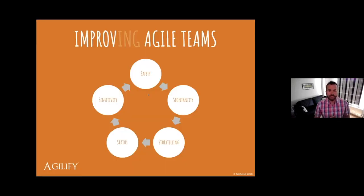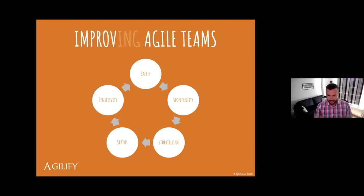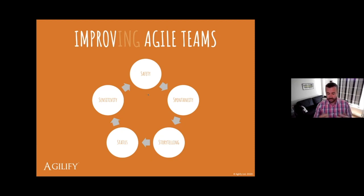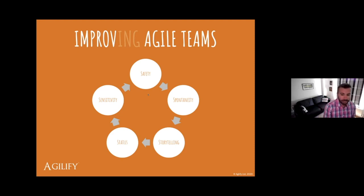So there we have it — five different themes that really cement what an improviser does on stage, but hopefully with extreme amounts of overlap with what agile practitioners do on a daily basis. We're trying to operate in that living-in-the-moment environment where there are offers all around us. In order to create offers, we need a sense of safety — we need to know our offers aren't going to be rejected. If we can connect those offers into a story, our storytelling capabilities will increase energy and engagement within agile teams. Small adjustments in status affect our ability to collaborate, and all the time we remain sensitive to the emotions of those we work with as well as our own.